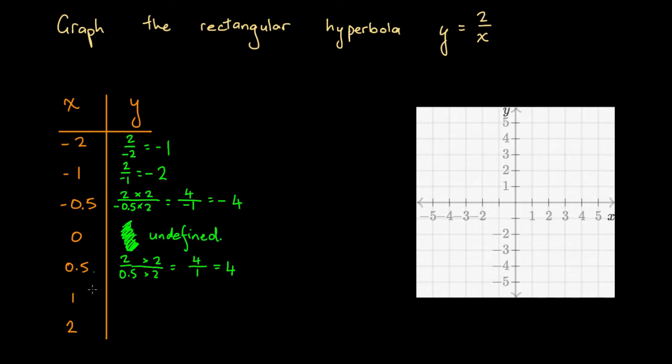OK, here we've got x equals 1, so y equals 2 over 1. 2 over 1 is just 2. We've got x equals 2, 2 over 2. 2 divided by 2 is 1. So this is going to reduce to 1.